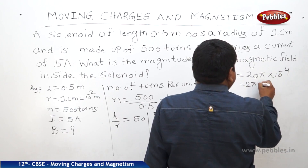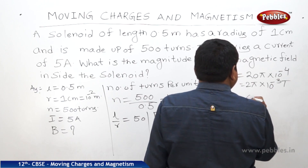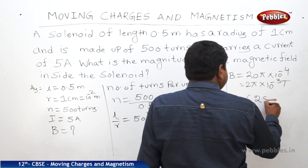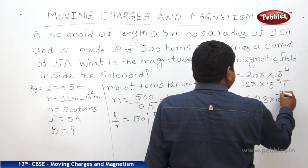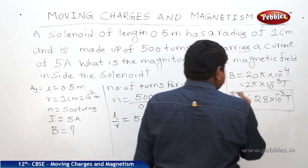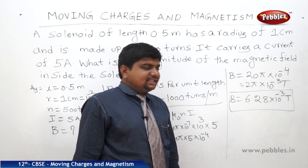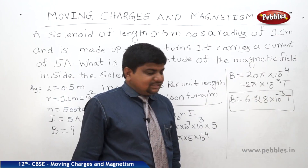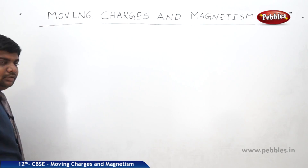So that gives 2π × 10⁻³, which equals 6.28 × 10⁻³ tesla. Dividing by 10 × 10 we get 2π × 10⁻³ tesla, where 2π equals 6.28, so the answer is 6.28 × 10⁻³ tesla. This is the magnetic field inside the solenoid.